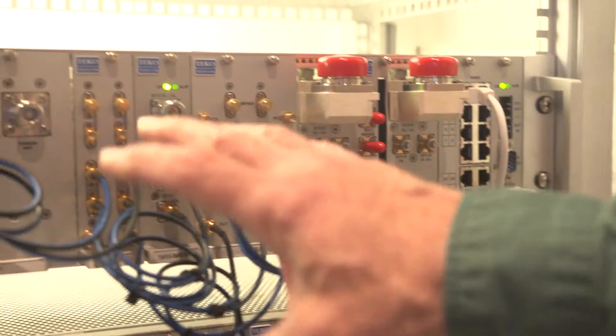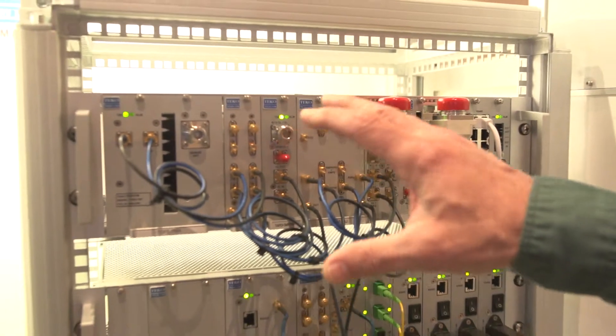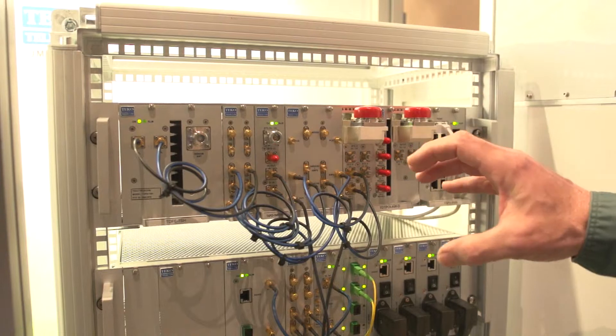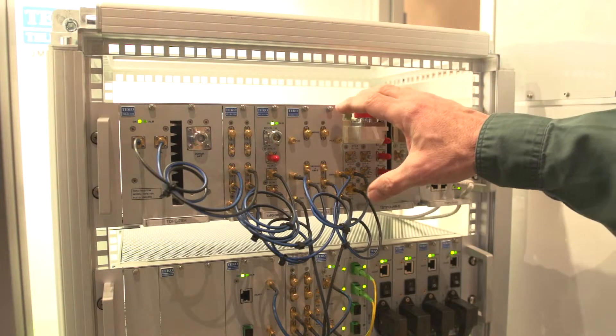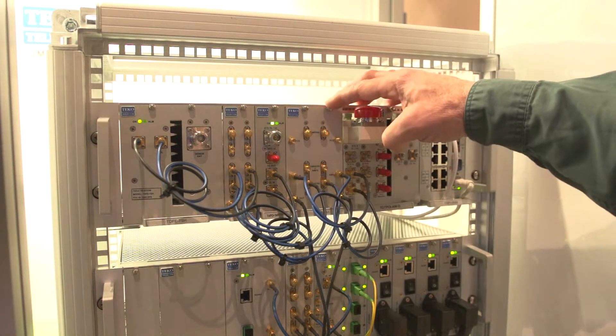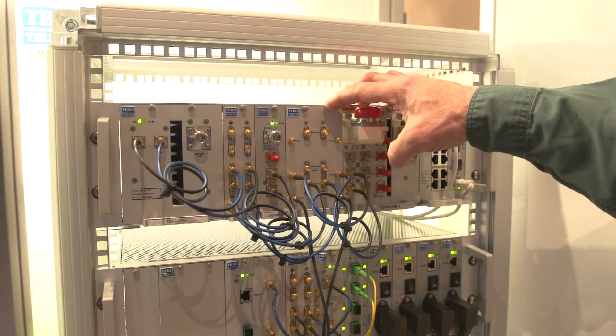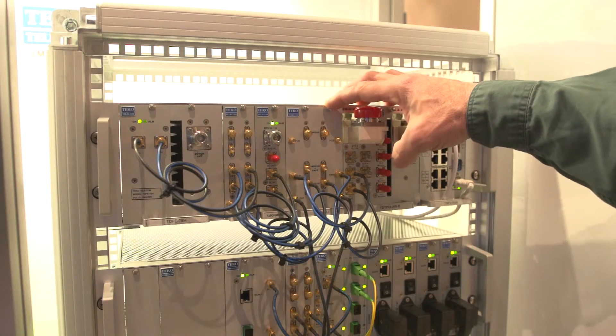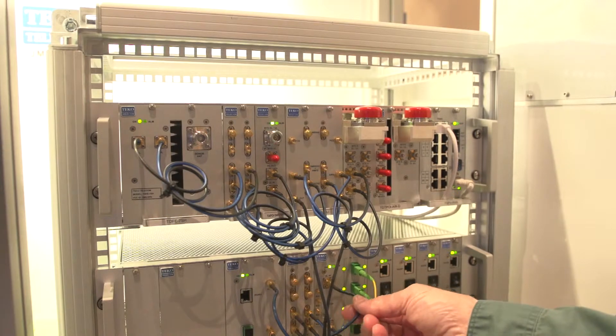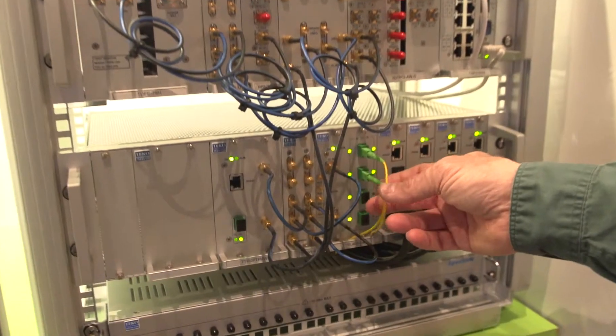Once we have all of the individual bands into the system, we combine them through a multiplexer. This version is called an esiplexer, which will combine up to six separate bands. Once the bands are all combined, it's fed into our optics card.